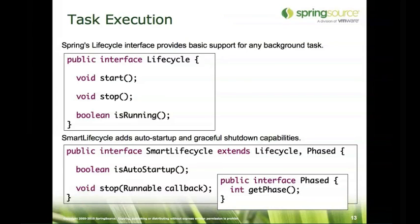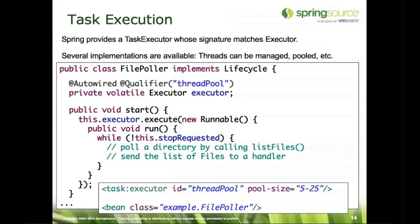Once you implement something as a lifecycle bean, it's picked up by the container automatically. The file poller is just registered as a bean, the container recognizes it, and when the start method is called, we're delegating to a task executor. The reason is that you don't want to directly create and start threads within your application. There are many reasons to have thread management abstracted away — primarily if you're running in multiple environments or deploying into an application server where you are not supposed to manage your own threads.